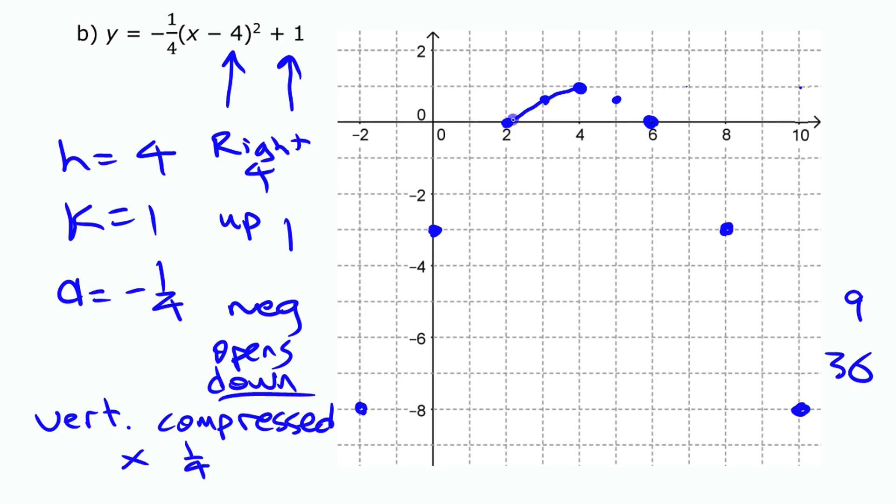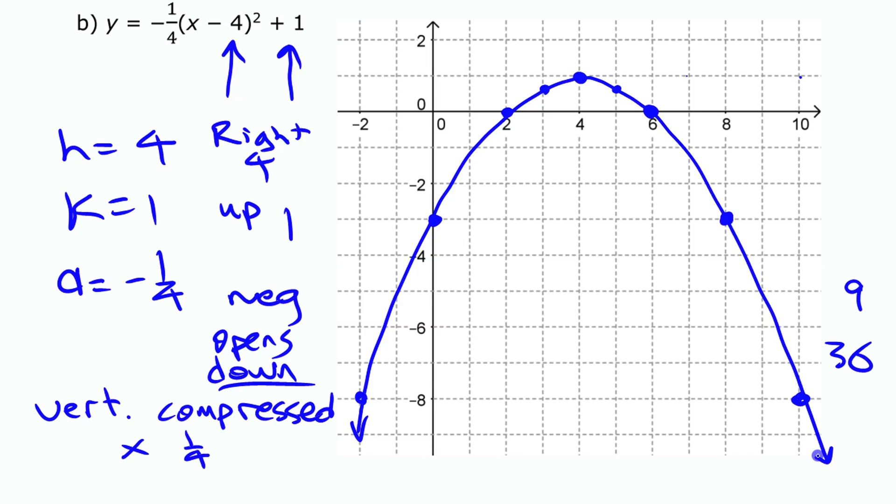So we'll try and draw a smooth curve through all of that. And that's your graph. So that's two examples of sketching the graph of a quadratic function from its vertex form equation and knowing how those three parameters, a, h, and k, affect the graph.